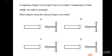A negatively charged rod is brought close to an isolated T-shaped piece of metal; initially the metal is uncharged. Which diagram shows the induced charge? Since the rod is negatively charged, the nearer end will get opposite charge — positive — and the negative charges from the metal piece will repel to the farther end.